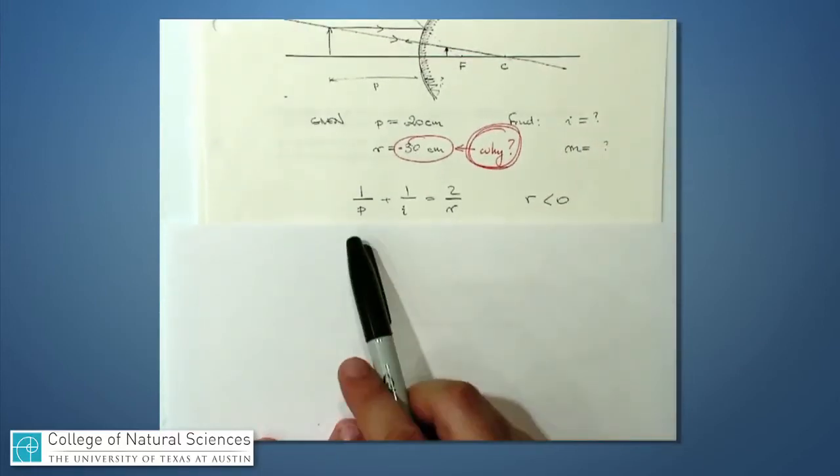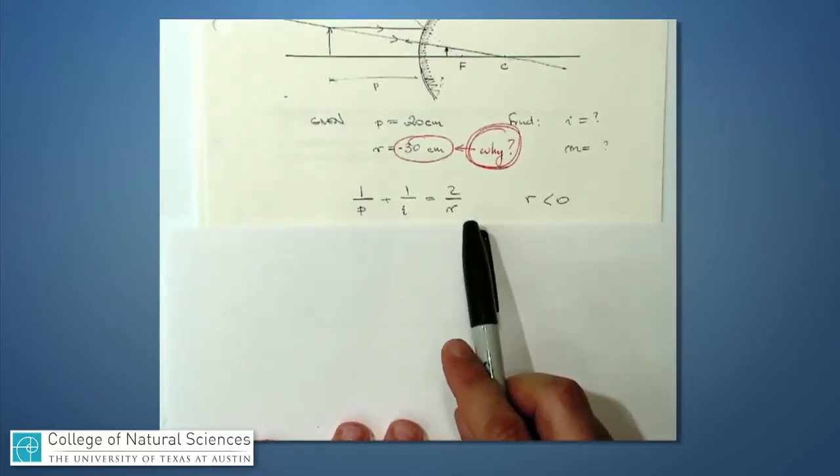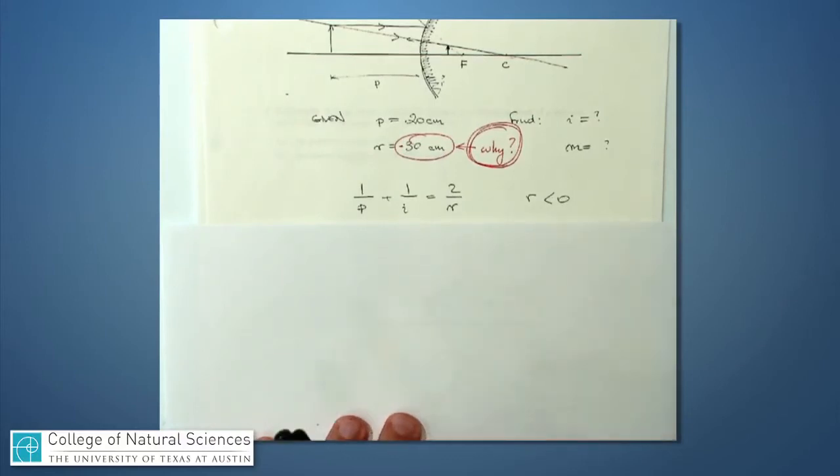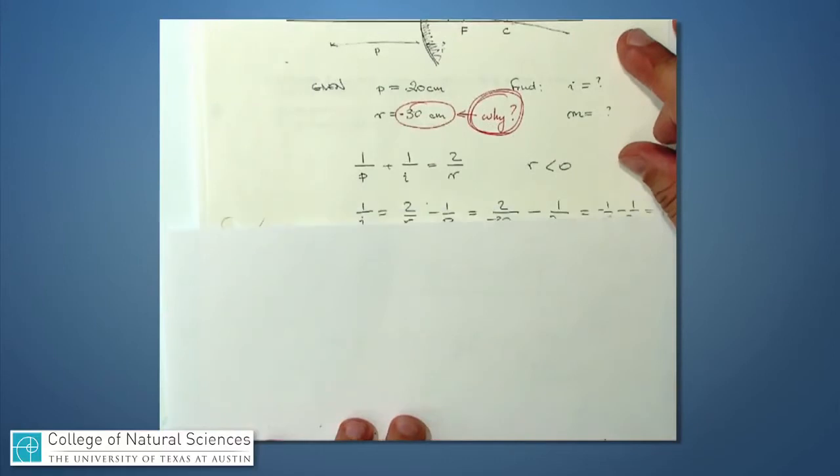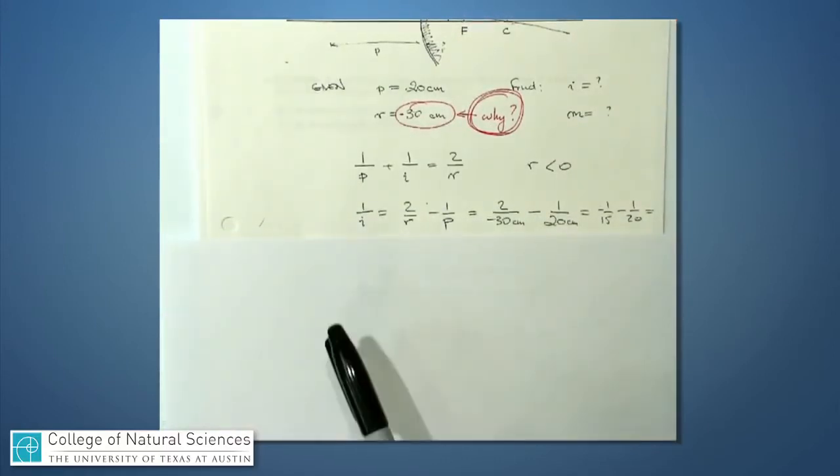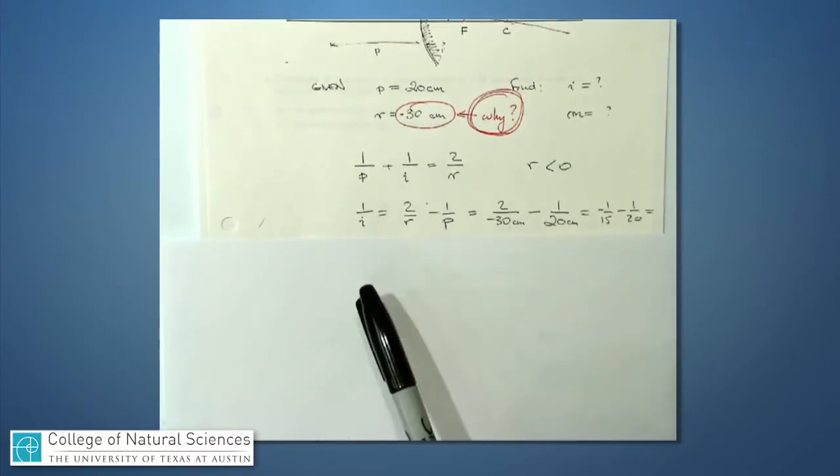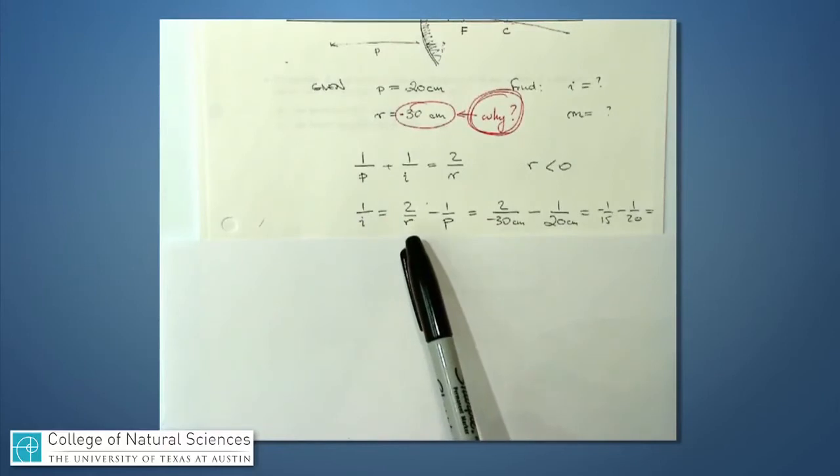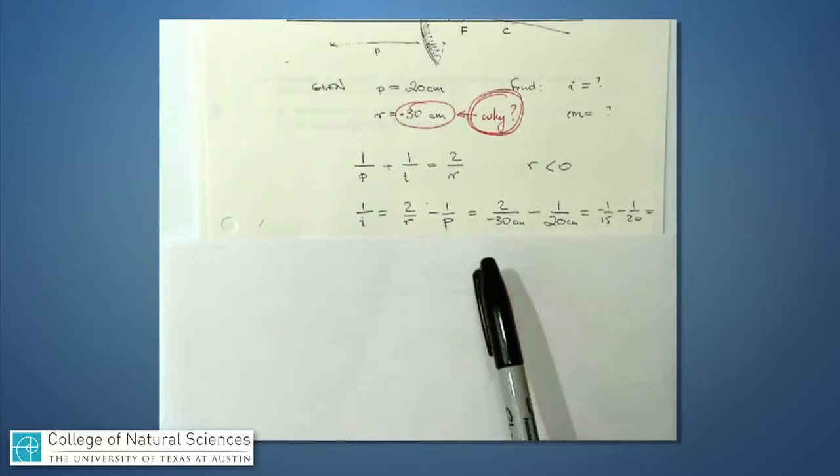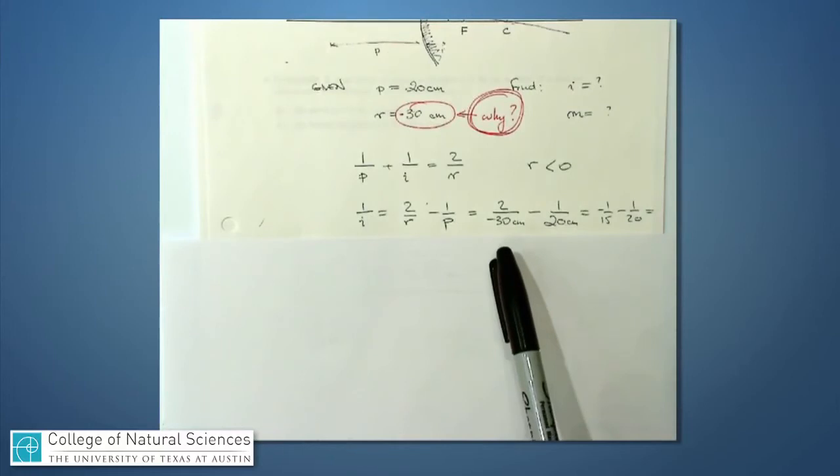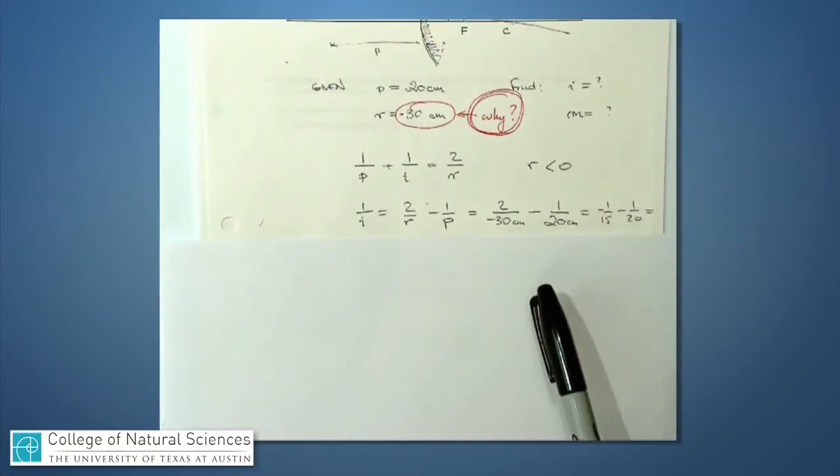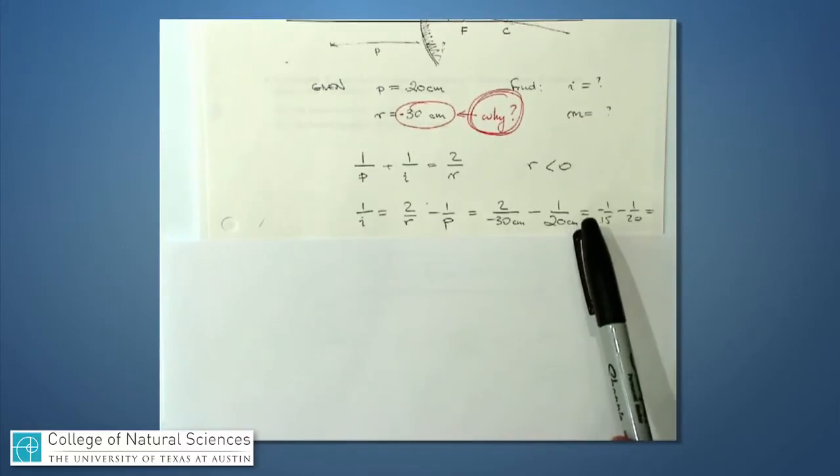Then we go to our expression 1 over p plus 1 over i is equal to 1 over f and I just substitute it in. The f is r over 2. And if I start using some numbers now, if I move over the 2 over r on this side, I have 1 over i equals 2 over r minus 1 over p and this is 2 over minus 30 centimeters minus 1 over 20 centimeters.